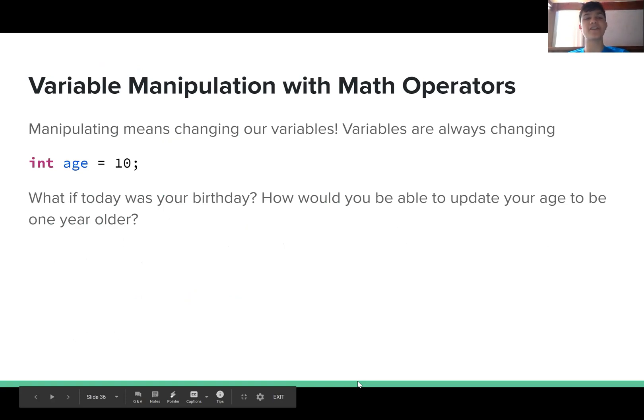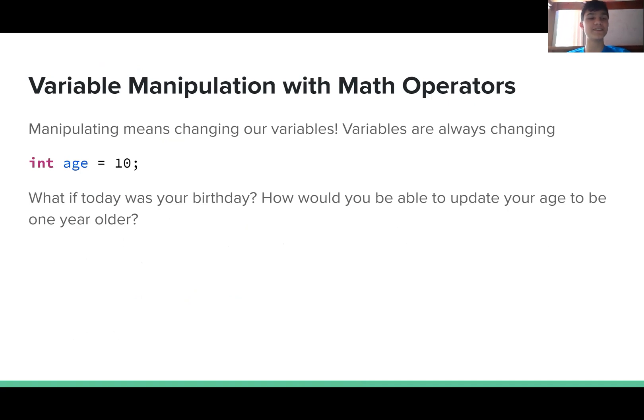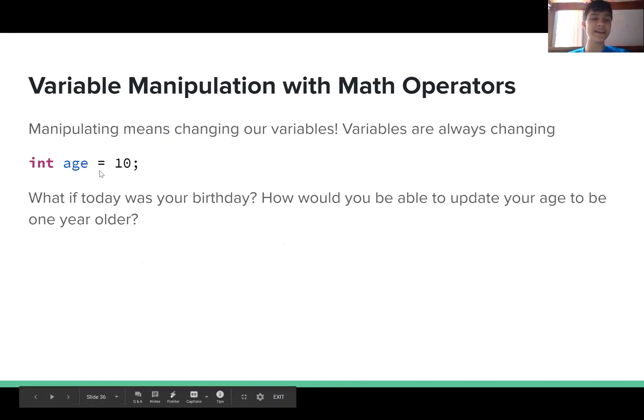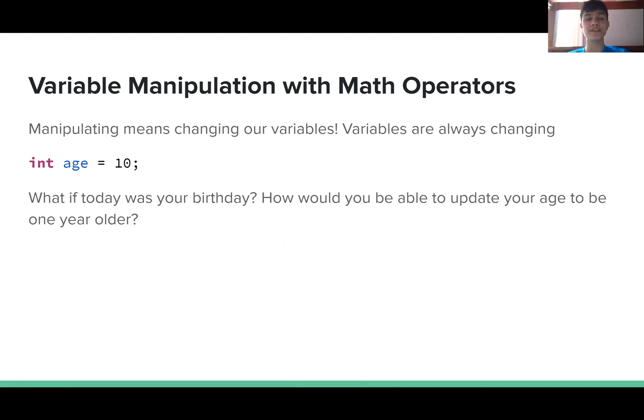Variable manipulation with math operators. Manipulating means changing our variables. Variables are always changing. So we take our statement, int age equals 10. But we want to alter it because today is our birthday. So we take our statement and add another statement to it: age equals age plus 1. It takes the existing value of age, in this case 10, and adds 1 to it making it 11. Int age now equals 11.